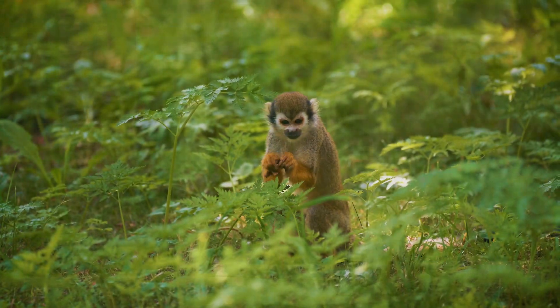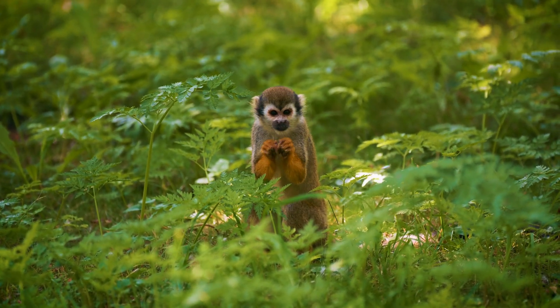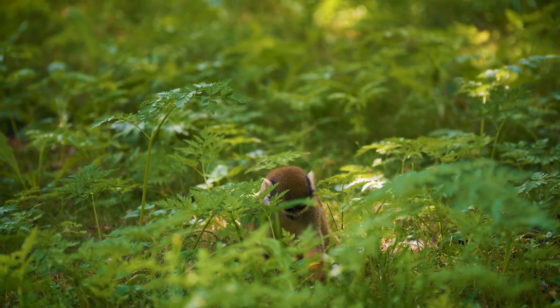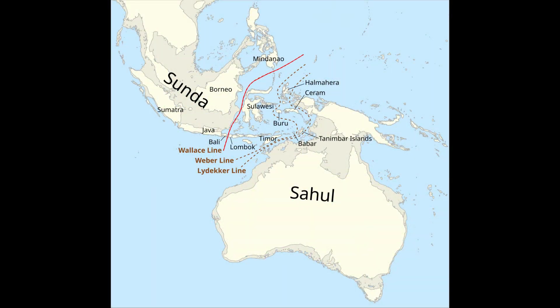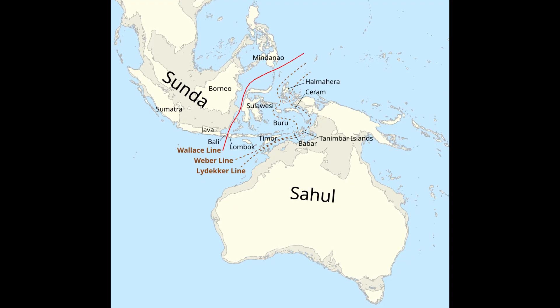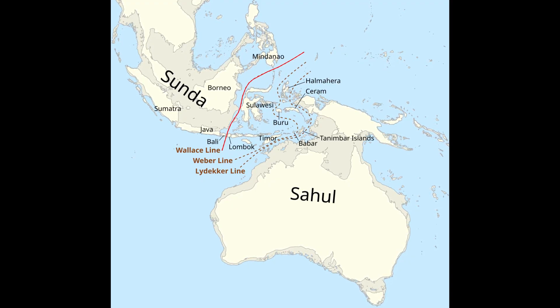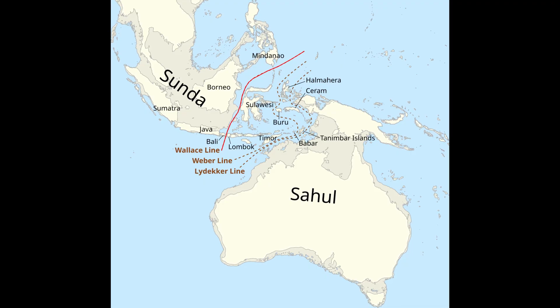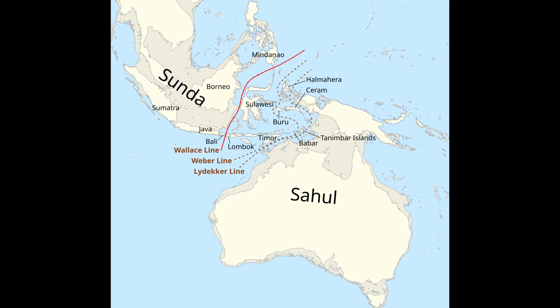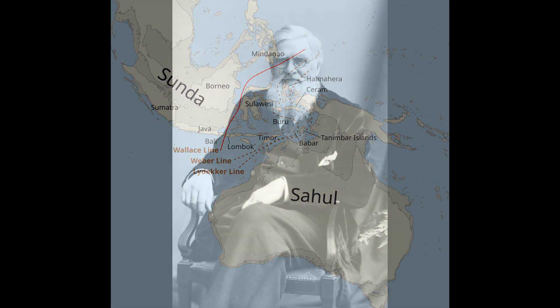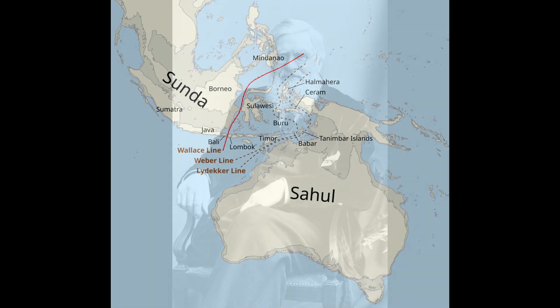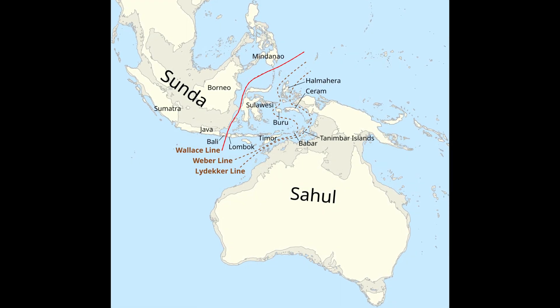One of the primary reasons Australia lacks monkeys is a powerful biogeographic boundary known as Wallace's Line. This invisible line runs between the islands of Bali and Lombok, as well as between Borneo and Sulawesi, dividing the animal species of Asia from those of Australasia. It was first identified by Alfred Russel Wallace, a 19th century naturalist who noticed that despite their geographical proximity, the species of animals on either side of this line were vastly different.